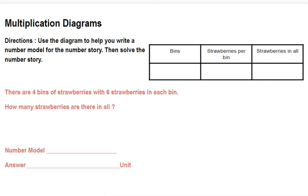Let's take a look at this problem. It says use the diagram to help you write a number model for the number story, then solve the number story. I'm going to read that number story now. There are four bins of strawberries with six strawberries in each bin. How many strawberries are there in all?